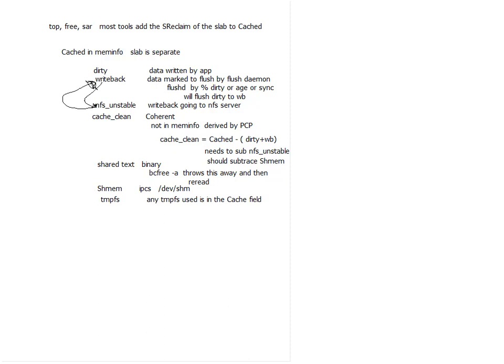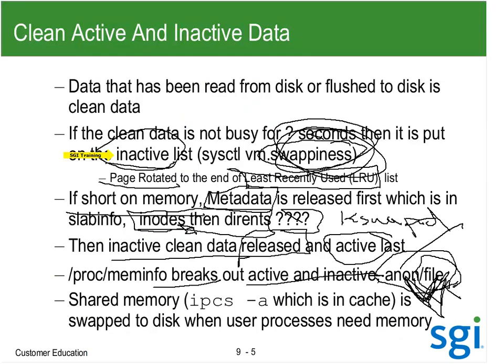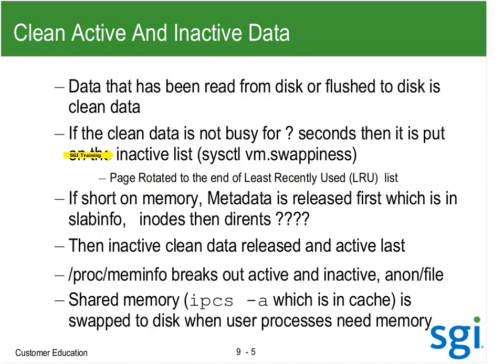I can't free up any dirty or writeback, or even unstable, until that stuff is coherent and clean. People always say all my memory is full, it's all cached. You need to pull that cached stuff apart and figure out what the pieces of it are. That's what I've been trying to do all week.